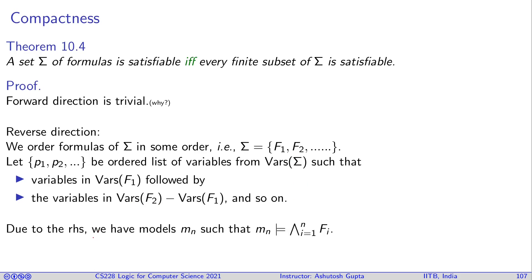Due to the RHS, we have model M_N such that M_N satisfies the conjunction of all the formulas up to length N. So you collect first N formulas and take their conjunction. This is a finite subset of Σ. Therefore, it must be satisfiable. Therefore, there must be a model M_N. So now let's suppose you have this model M_N. Using these model M_Ns, you want to construct a model M that satisfies Σ. So we have finite models in some sense and now you have to extend it to M. So that's where that previous theorem comes in.